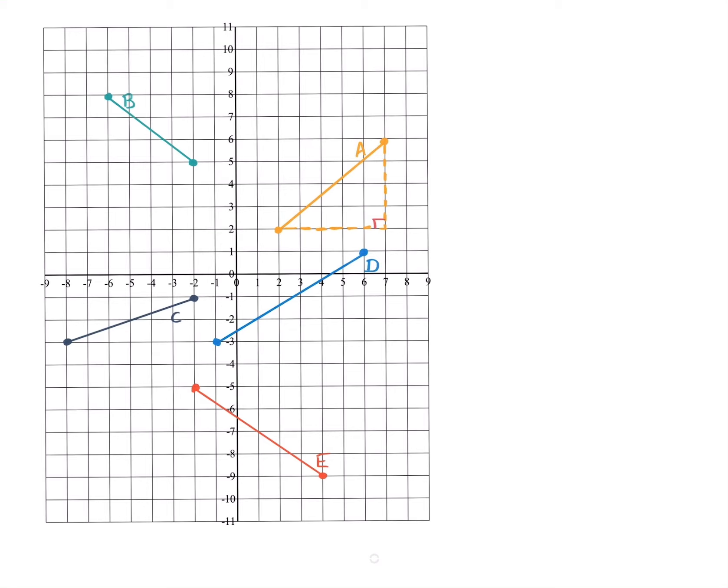Now, I want to count the amount of squares that it is going up and it is going across. So we have one, two, three, four. So the length of this side of the triangle from the top to the bottom is four.